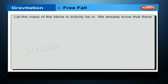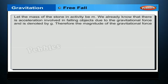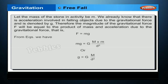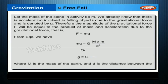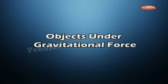Let the mass of the stone be m. There is acceleration involved in falling objects due to the gravitational force, denoted by g. Therefore the magnitude of the gravitational force F will be equal to the product of mass and acceleration due to gravity, where M is the mass of the earth and d is the distance between the object and the earth.